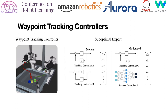On the other hand, constructing controllers that achieve partial task success and exhibit desired behavior is often possible with methods from classical robotics, such as defining waypoint tracking controllers for picking up objects in the environment. In addition to simple tracking controllers, learned controllers can also be optionally used in conjunction to construct complex suboptimal experts.